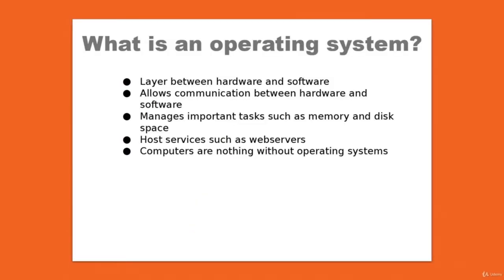First of all, what is an operating system? The very basic definition of an operating system is that it is the layer between your hardware and software. It allows your hardware and software to talk to each other. The operating system does things like manage memory, hard disks, and all of that important stuff. It also makes your mouse cursor move when you are moving your mouse.